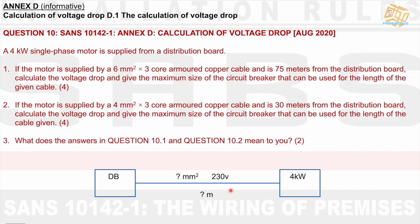The next question, question 10, says here clearly a 4 kilowatt single phase motor is supplied from a distribution board. It says that if the motor is supplied by 6 millimeters squared, three core armored copper cable and is 75 meters from the DB, calculate the voltage drop and give the maximum size of the circuit breaker that can be used for the length of the given cable. Interesting question for four marks, which means probably we're going to have to go to some tables.